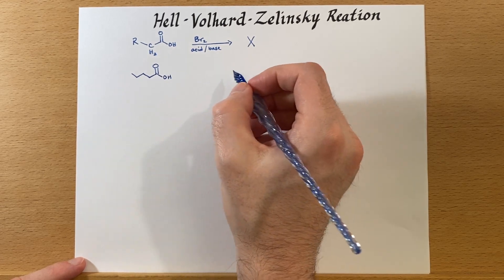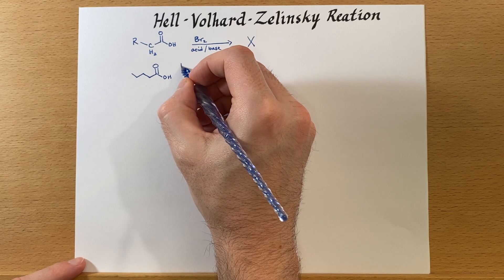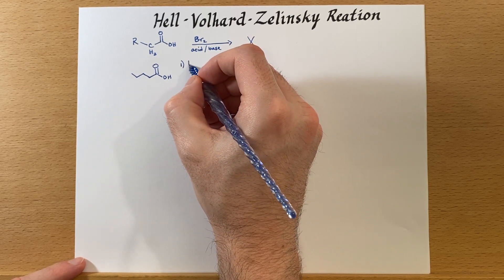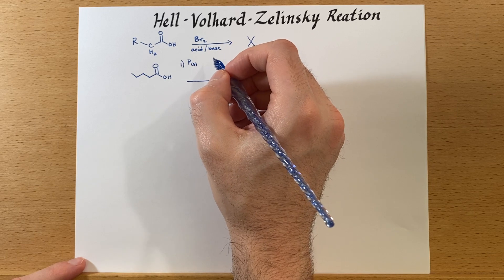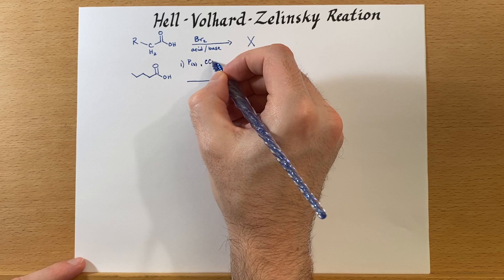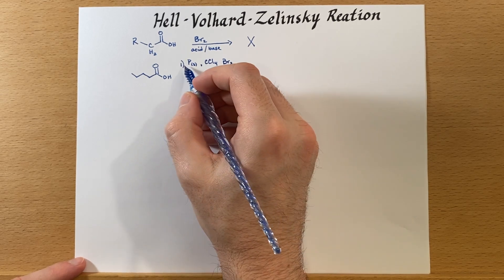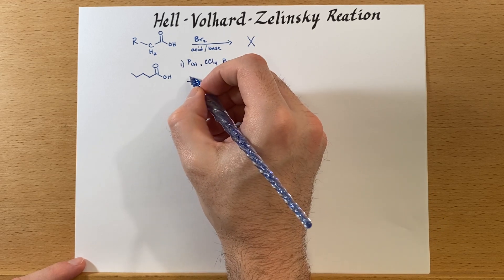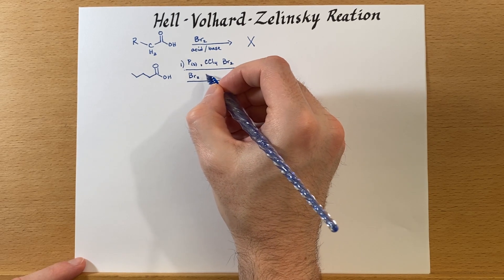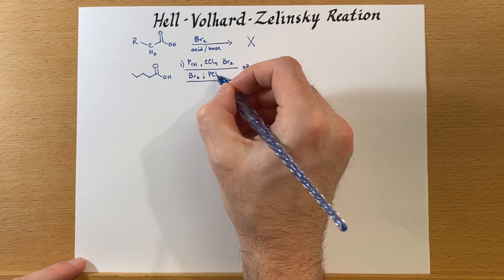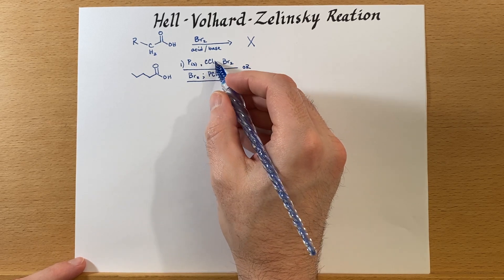I'm going to sketch out the actual reaction and the conditions used. Here is an example of a carboxylic acid, and this will occur in two steps. First step: we could either add phosphorus solid with carbon tetrachloride as solvent and bromine, or use bromine and PCl3. This is just going to catalyze the reaction. Either one of these conditions will work — it really just depends on what you have in your storeroom.